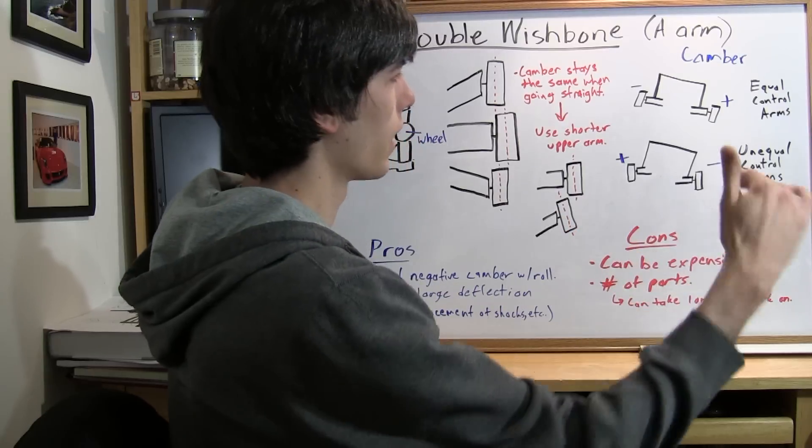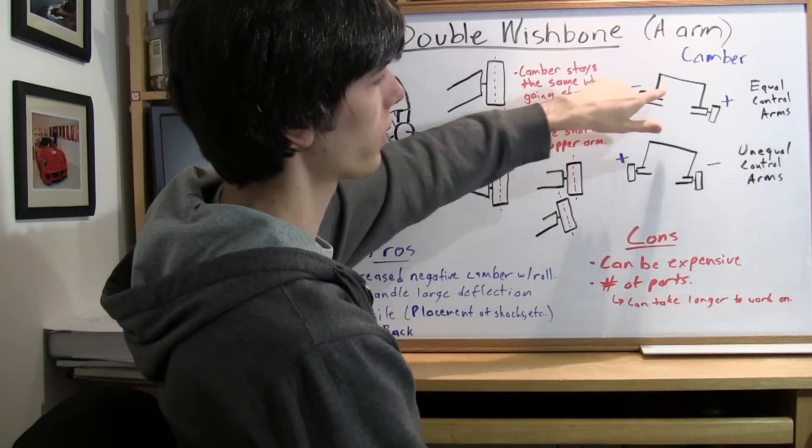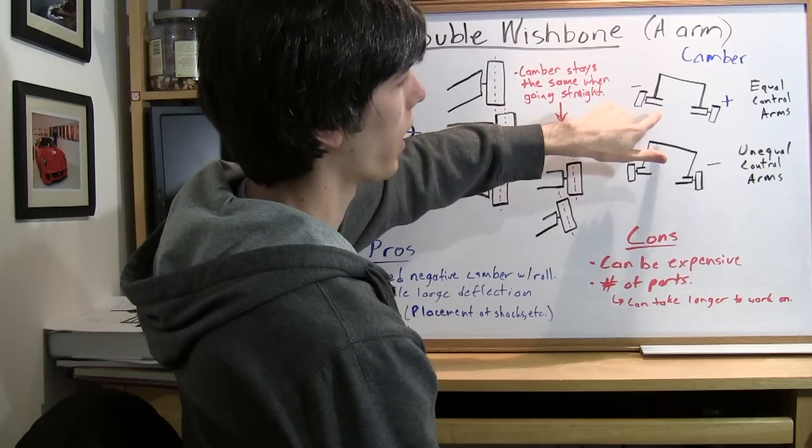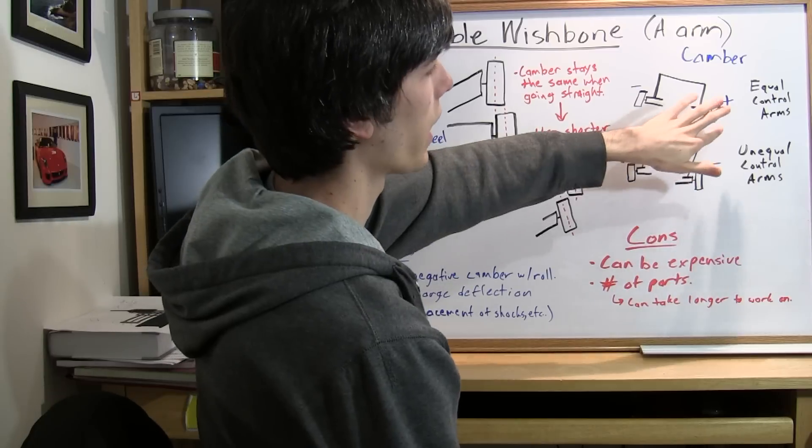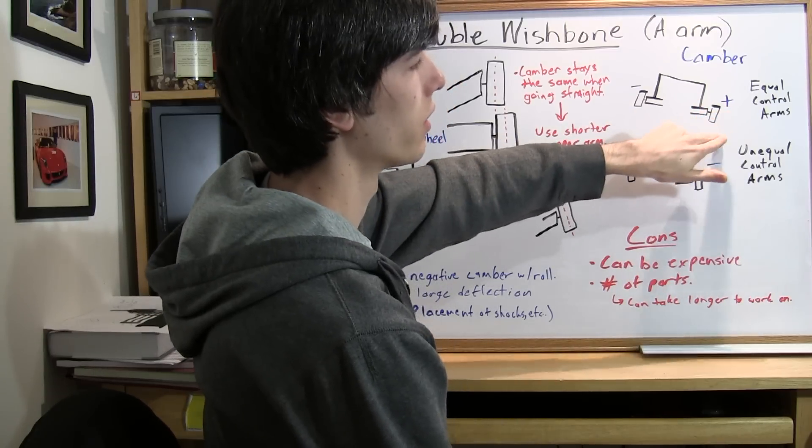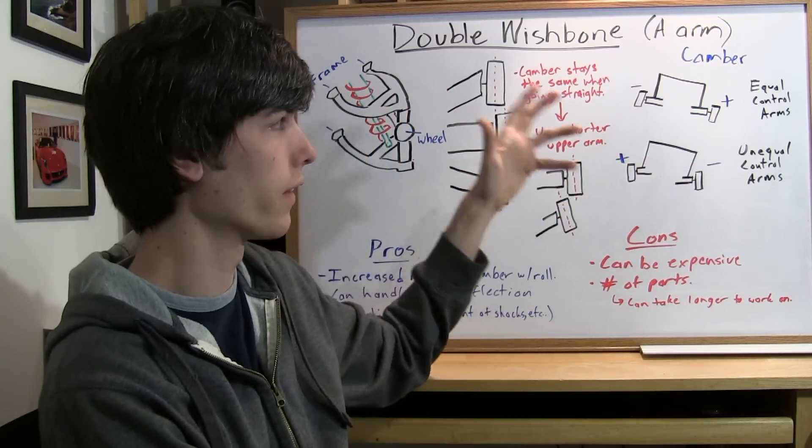this will be a left corner and so the body is going to roll to the right. So as the body rolls to the right and you have equal length top and bottom control arms, you're going to have positive, slight positive camber on the outside tire, which is taking most of the load and this is bad.